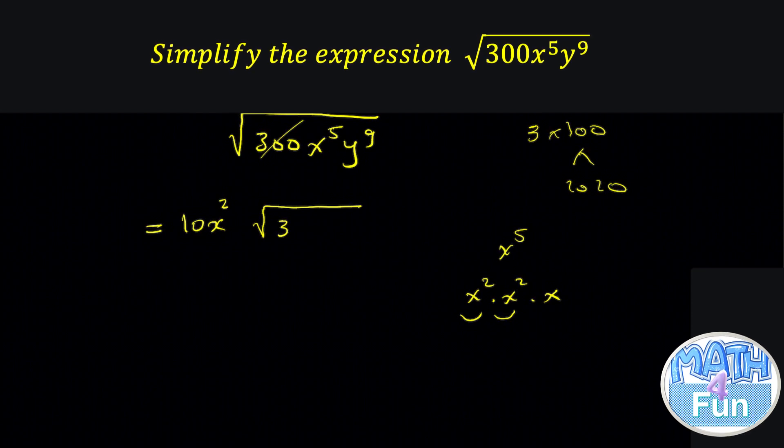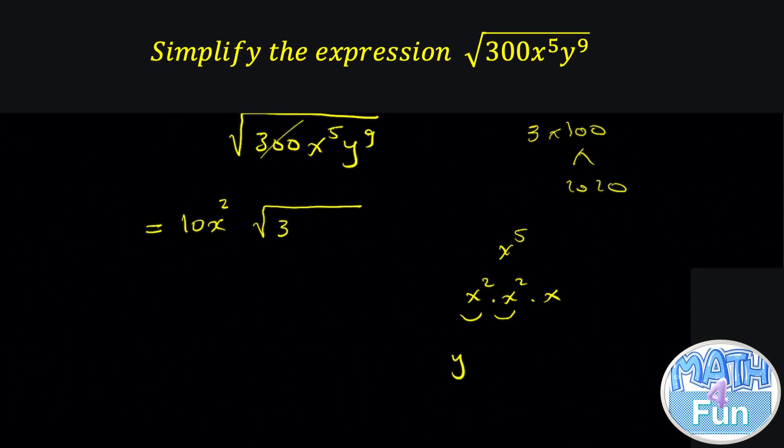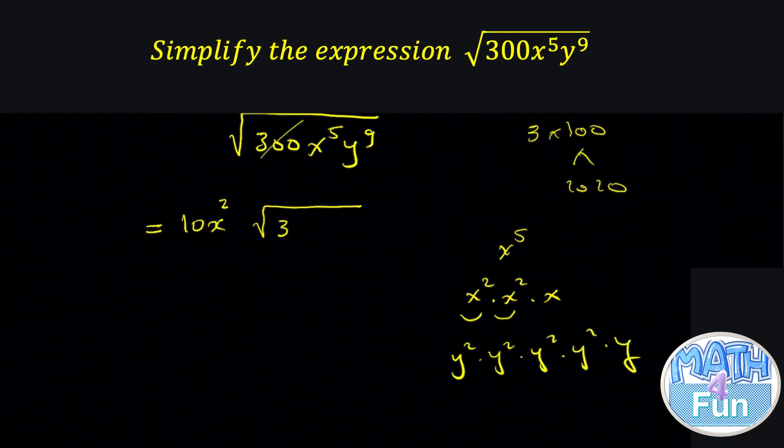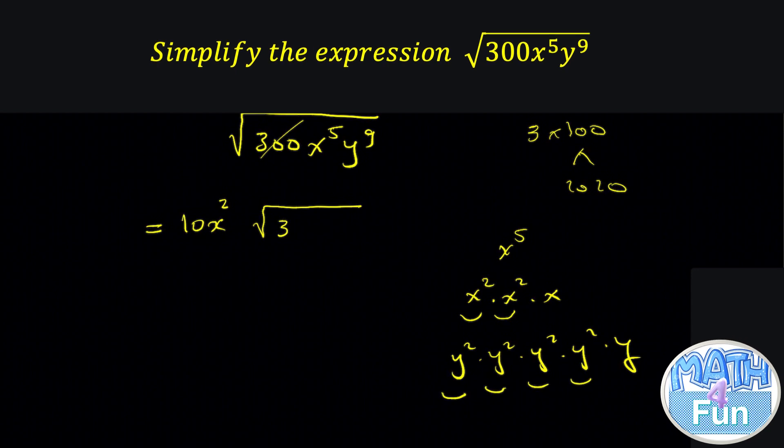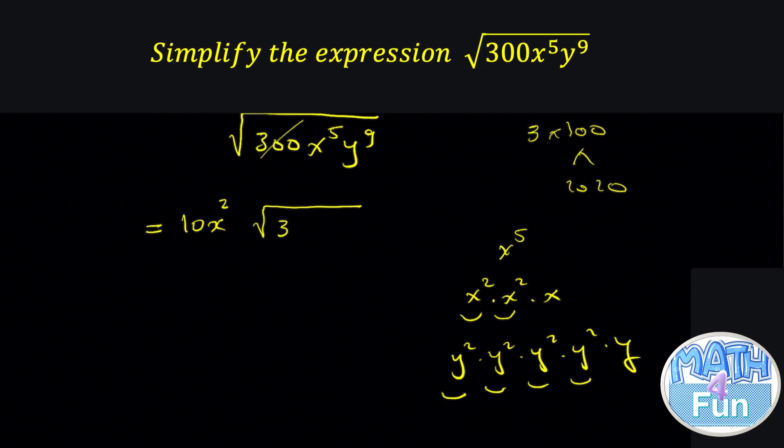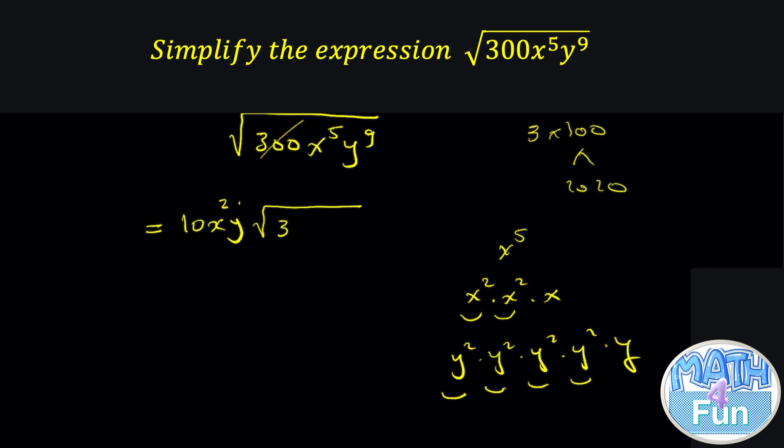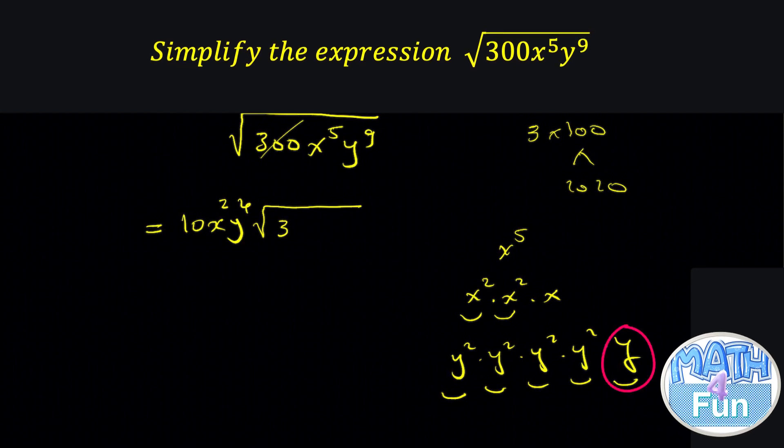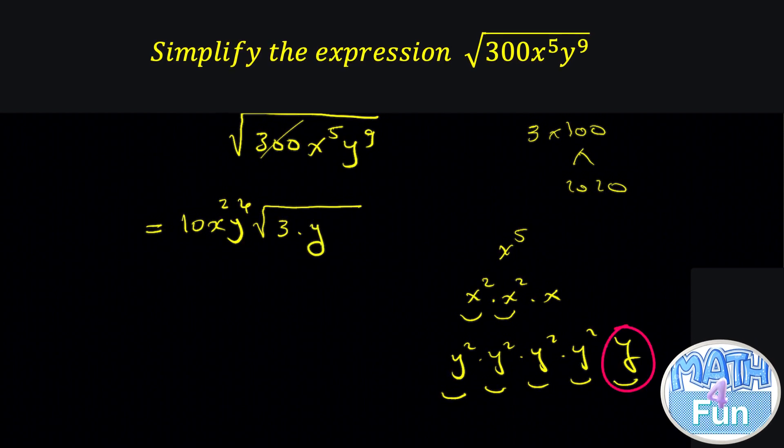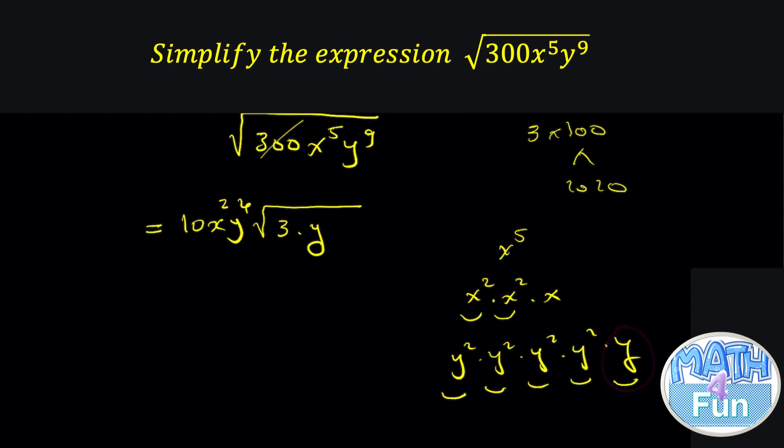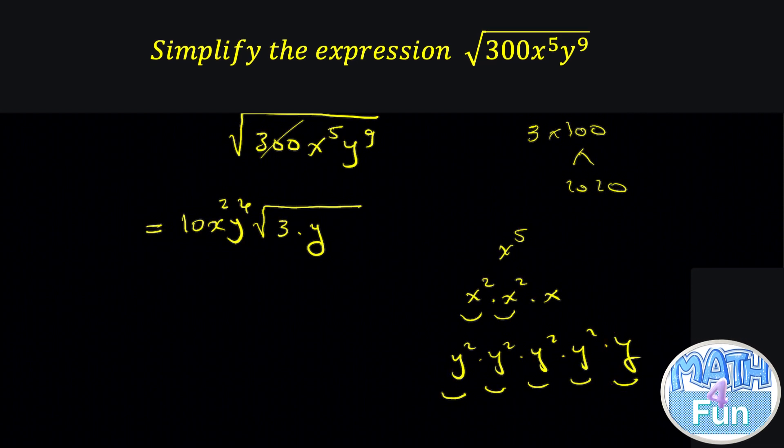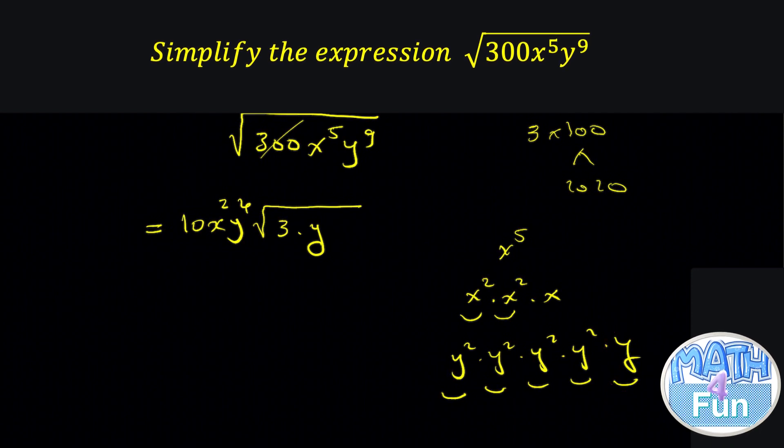Now regarding the y to the power 9, we can write it as y squared times y squared times y squared times y. So how many times we can take the y outside the radical? We can take it 4 times, so it becomes y to the power 4. And what's left inside? Left by y. So the final answer is 10x squared y to the power 4, radical 3y.